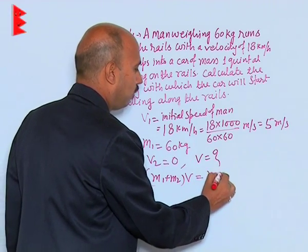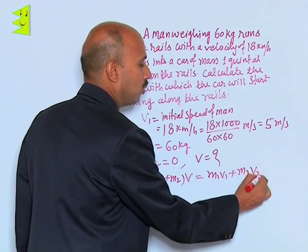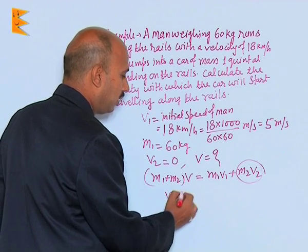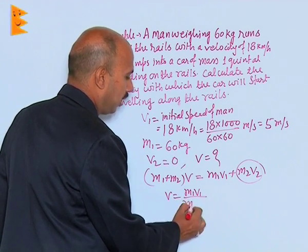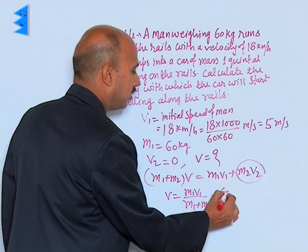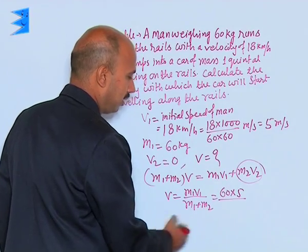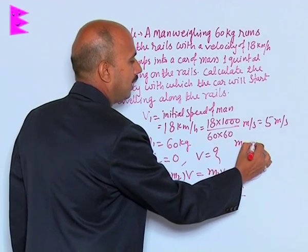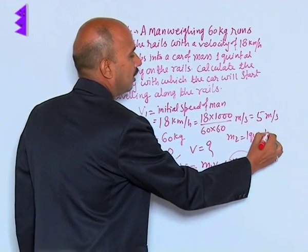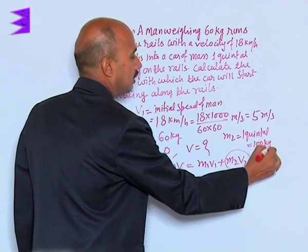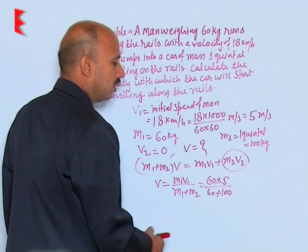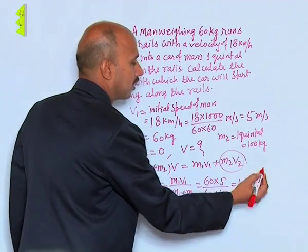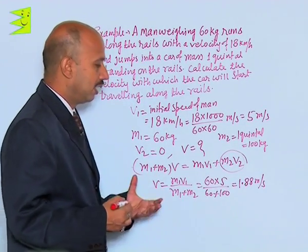Total initial momentum is M1V1 plus M2V2, but V2 is 0, so that term is 0. We can write V = M1V1 / (M1 + M2), that is 60 × 5 divided by (60 + 100), since 1 quintal equals 100 kg. Solving this gives approximately 1.88 meters per second. This is the final velocity of the man and car together.